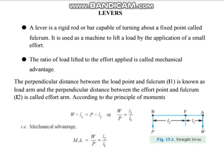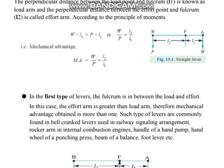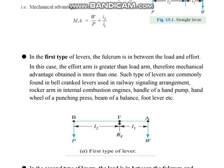Now let us come to the types of levers. There are three types. In the first type of lever, the fulcrum is in the middle — load arm is on one side and the effort arm on the other side. The effort arm is greater than the load arm, so mechanical advantage is always more than one.